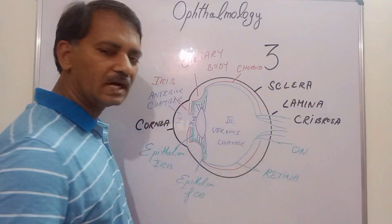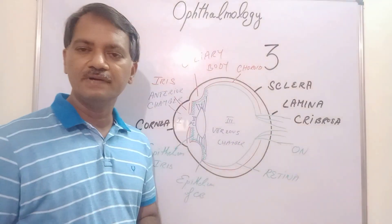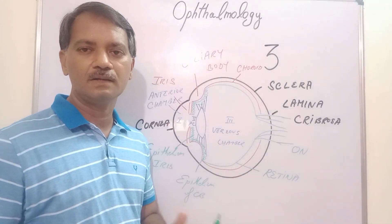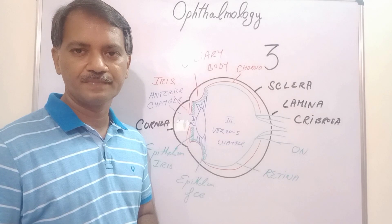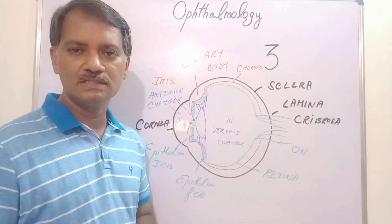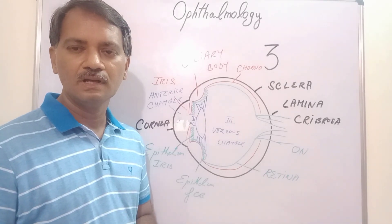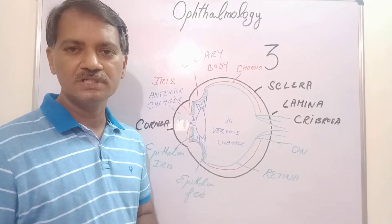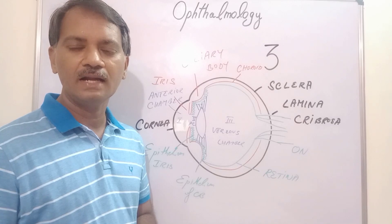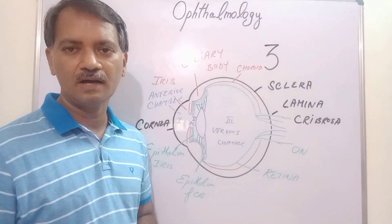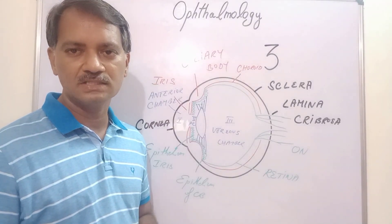The third compartment, which lies between the lens and the retina, is called the vitreous chamber. So the eyeball is divided into three compartments: anteriorly the anterior chamber, in the middle the posterior chamber, and posteriorly the vitreous chamber.